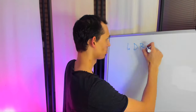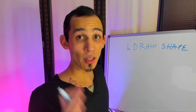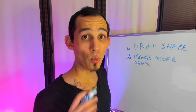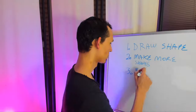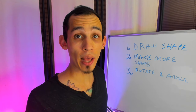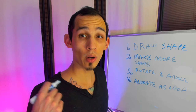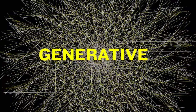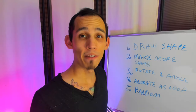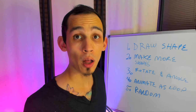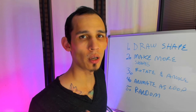First we need to draw a shape. Then we need a lot of shapes. Then we're going to rotate it and give it an angle. Then we're going to animate it as a loop. Then we're going to make things generative and random. And finally we'll add our polishing touches with the color and the stroke weight. Let's code.